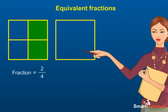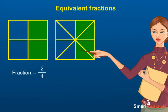In the second rectangle, we divide it into eight equal parts and shade four out of eight parts. Then, the fraction for the shaded part will be four by eight.